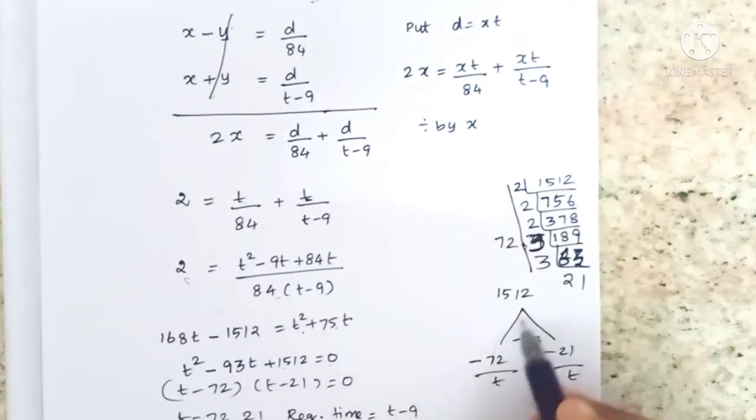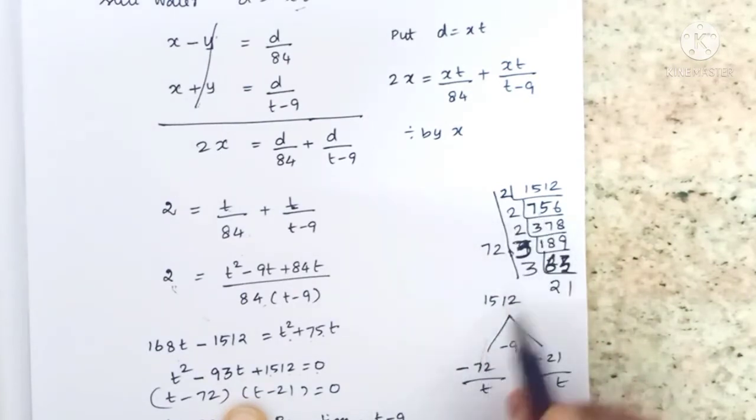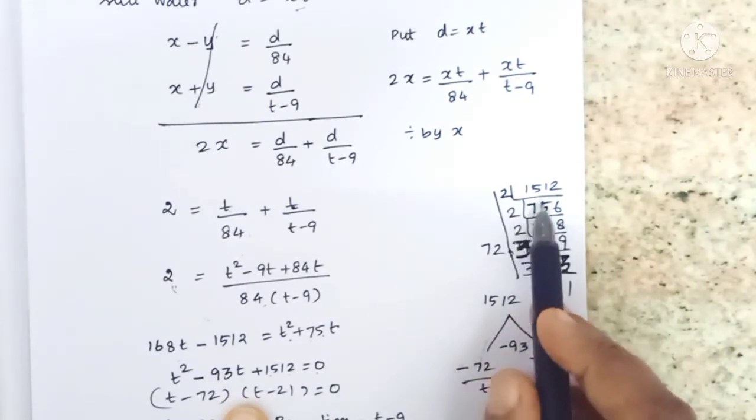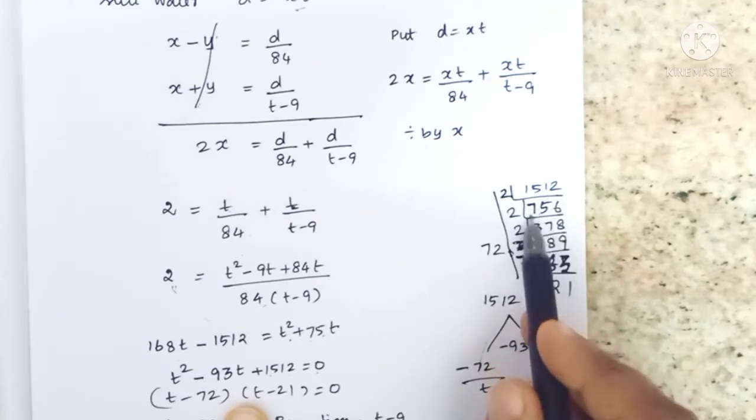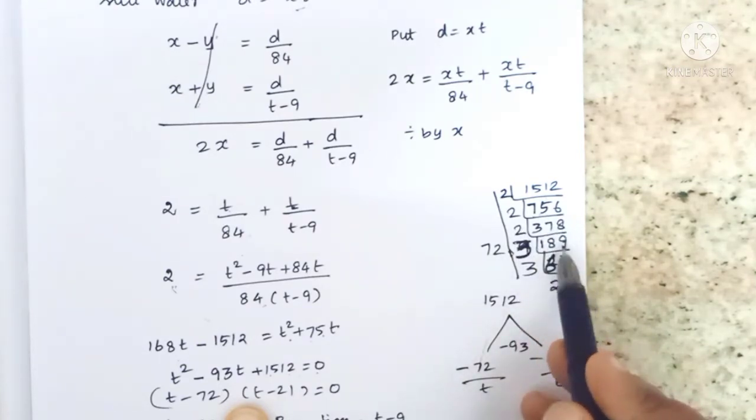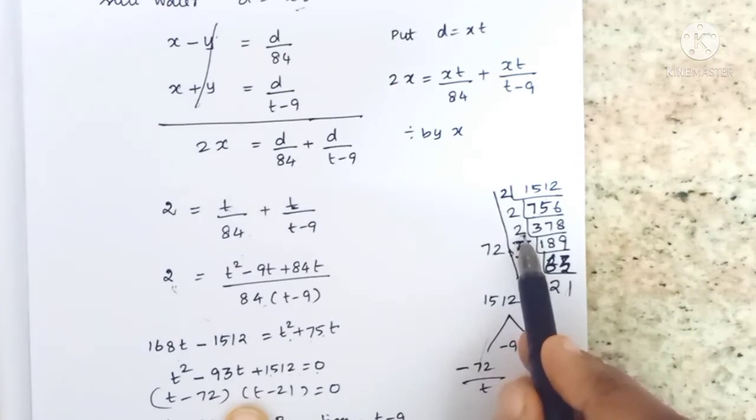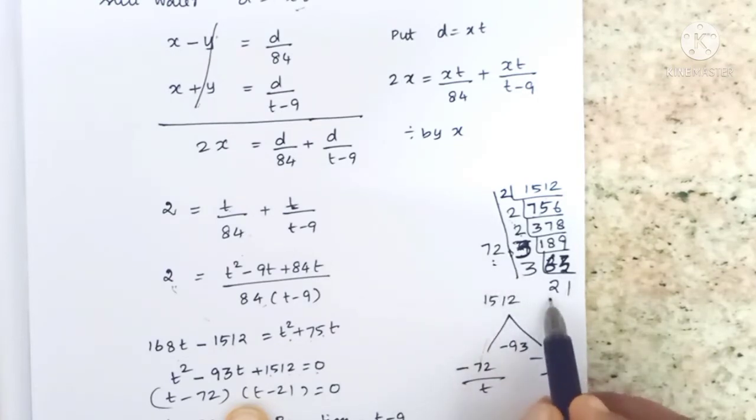Factoring: the product is 1512, the sum is minus 93. Testing factors of 1512, we find 72 and 21 work: 72 times 21 equals 1512, and 72 plus 21 equals 93.